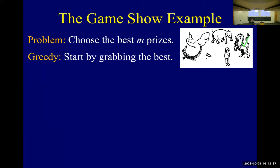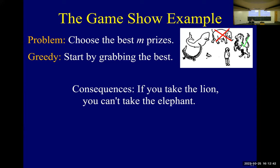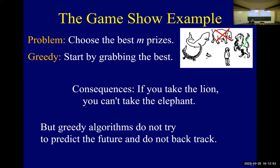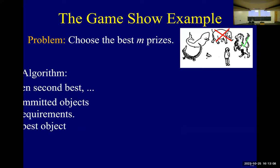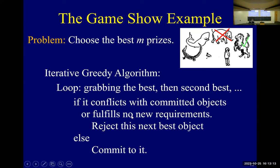So the greedy choice, you commit to the object that looks best. And we must prove that this local choice somehow doesn't have negative long-term consequences. And in this example, well, you know, you could start by grabbing the lion. Then if you take the lion, you can't take the elephant. And the thing about greedy algorithms is that we want them to be very fast. And the way we're going to make them fast is there's no backtracking. Once you make a decision, you're done with that decision.